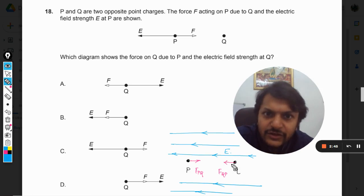It is also in this direction and this is also in the left direction. So I can say that for Q, the electric field will look like this.